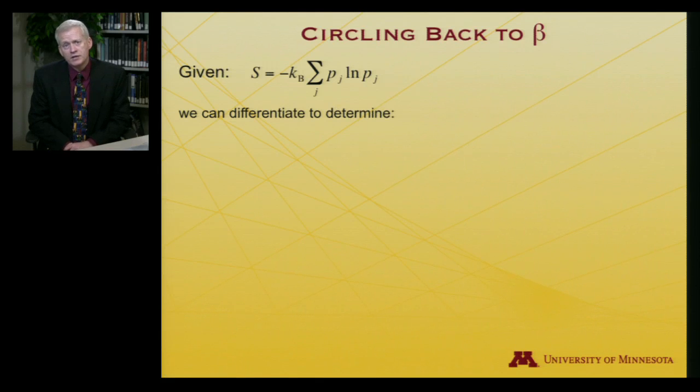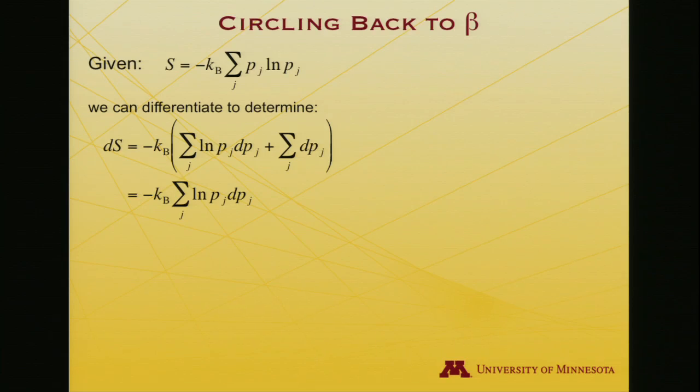And what I want to do is differentiate this expression. Just apply a differential operator, so I get ds is minus k, and then I'll be differentiating a product, so I need to use the chain rule. So first, I'll differentiate the probability, so I get a dp, and it's left multiplying log p. And then I will differentiate log p, that'll give me 1 over p.